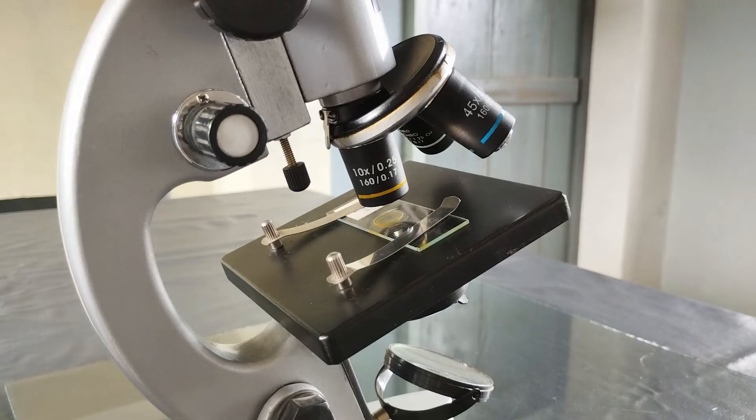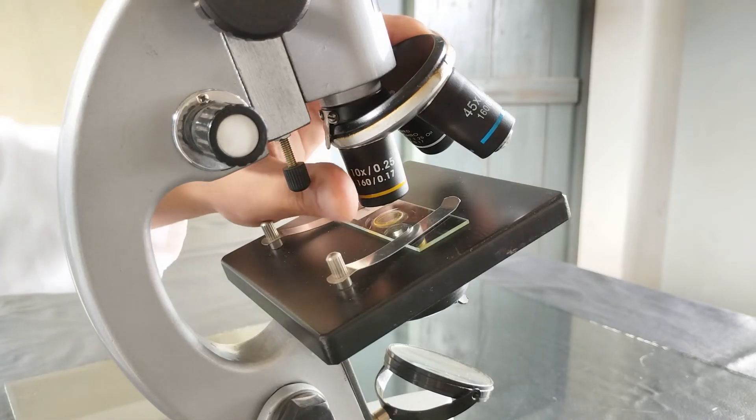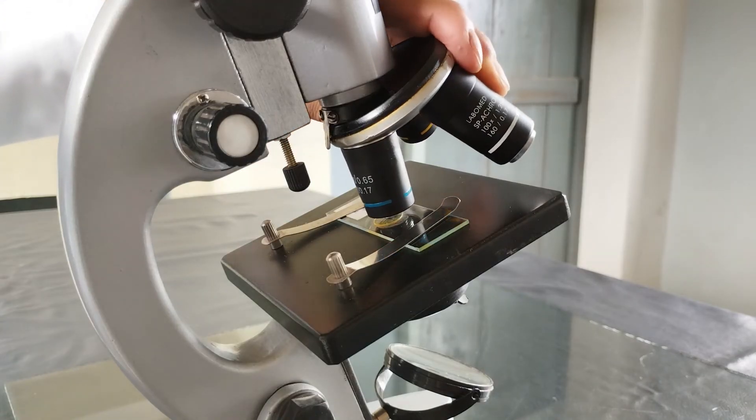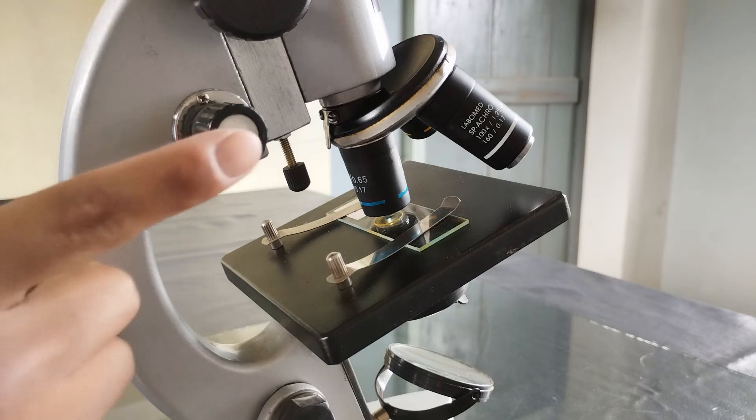Once you've locked onto the region of interest, change the objective lens to the high power, which is usually 40 or 45x, by rotating the nose piece until the high power objective lens clicks into position, aligning with the body tube. Use only the fine adjustment knob to bring the image into clear focus.